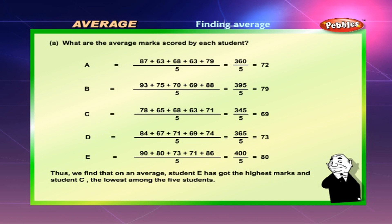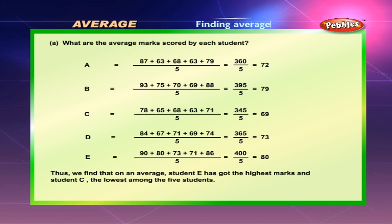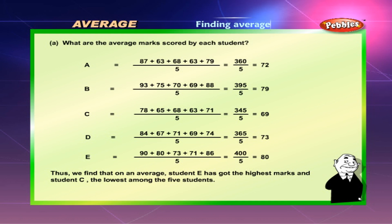For student D: 83 + 67 + 71 + 69 + 74 divided by 5 is equal to 73. For student E: 90 + 80 + 73 + 71 + 86 divided by 5 is equal to 400 divided by 5, which gives 80.